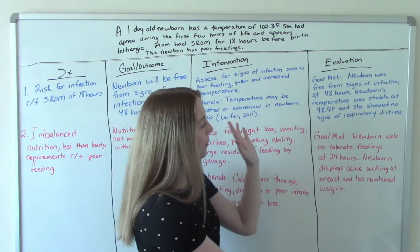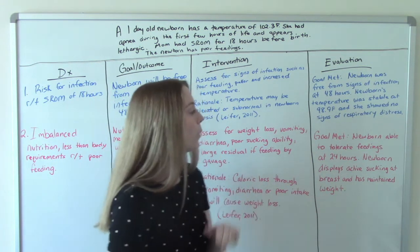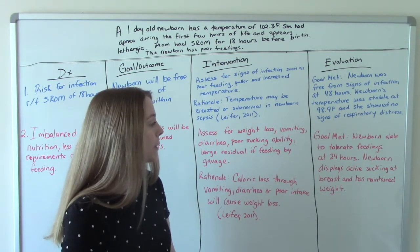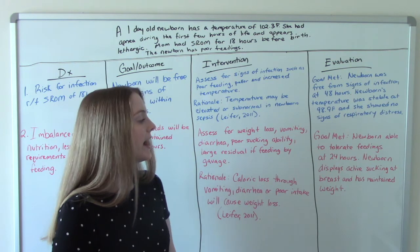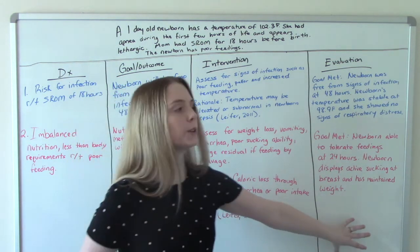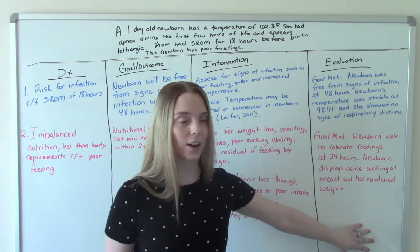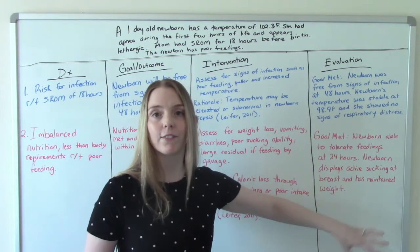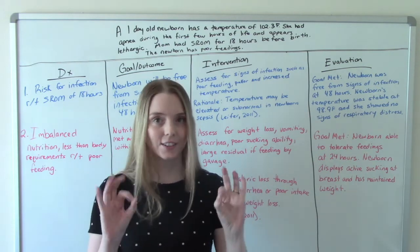So our goal has been met. The newborn is able to tolerate feedings at 24 hours. The newborn displays active sucking at breast and has maintained their weight. Now at this stage, we don't expect them to start gaining weight, not quite yet because it's only one day old. But saying that they've maintained their weight, they haven't lost too much weight, that's good.